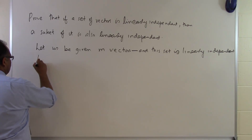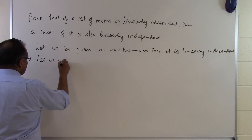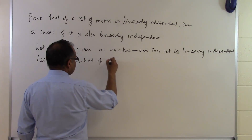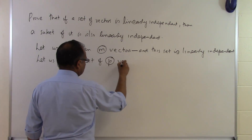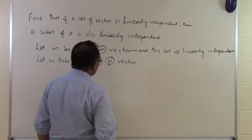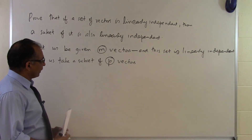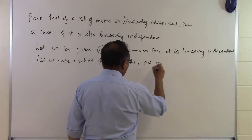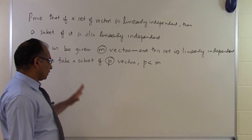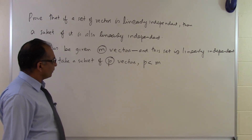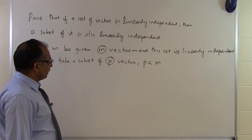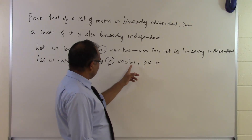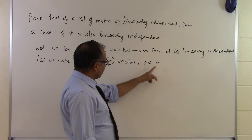Now let's take a subset of p vectors out of these m vectors. We assume that p is less than m. We already know the m vectors are linearly independent, so we don't need to prove it for exactly m vectors since that is already given. We are taking a subset of p vectors where p is less than m.